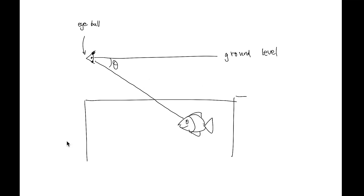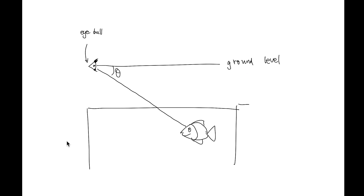This video is about angle of depression. First of all, you will have the eyeball, and then you will have to consider the horizontal line — this one to be the ground level. When you look at an object that is below the ground level, that means the reference line, then you will use this angle, which we will call the angle of depression.